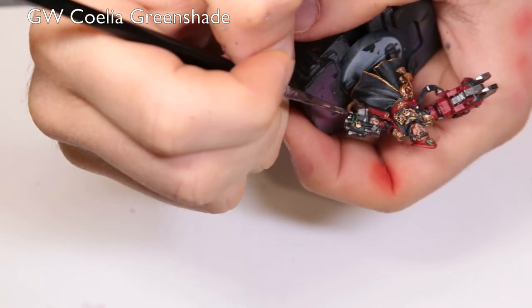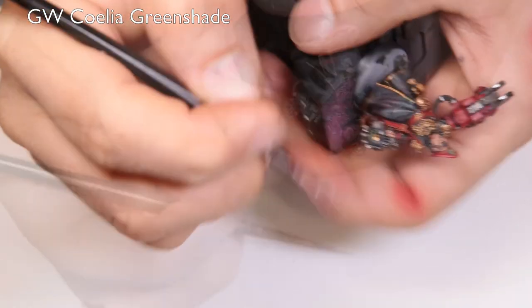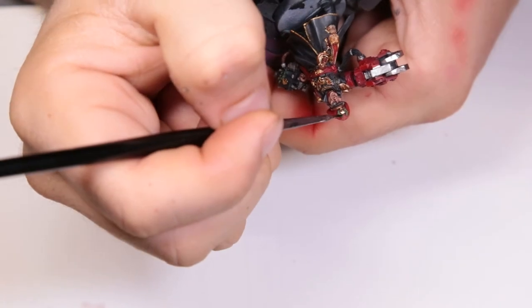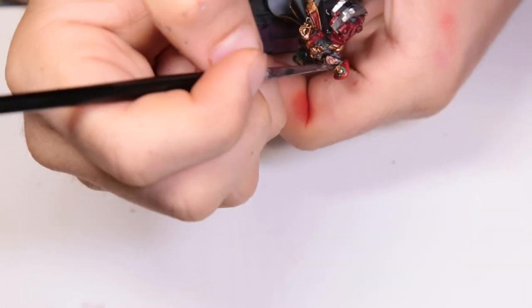Now we're looking at that Biel-Tan Green Shade. Just coming through and putting it in the laurels around the hat and around the gun.